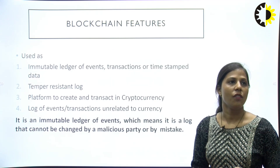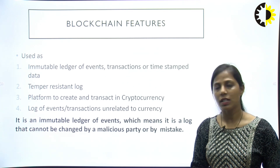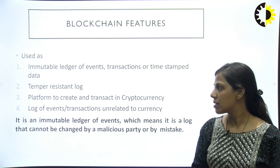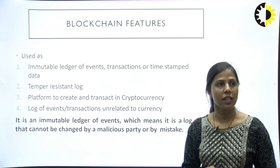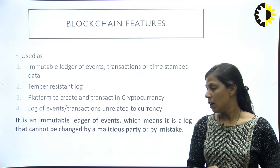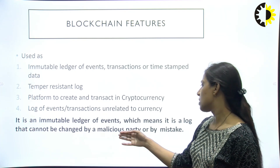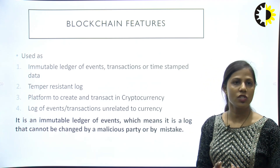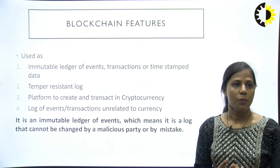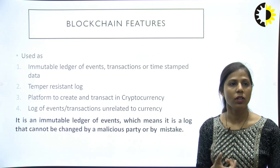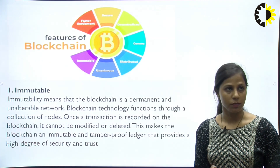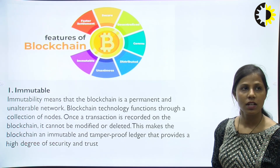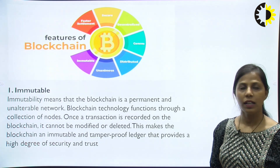These are features of the blockchain — it is used as an immutable ledger and a tamper-resistant log. The immutable ledger means it cannot be changed by any malicious party or by mistake. Transaction history cannot be changed. The different features include: immutability, security, decentralized consensus, and faster settlements.